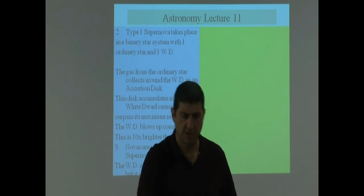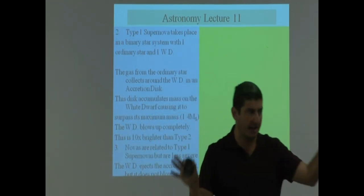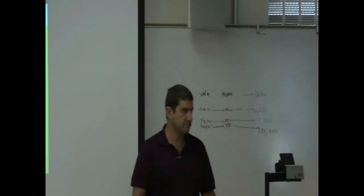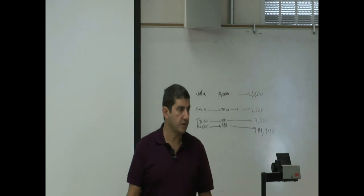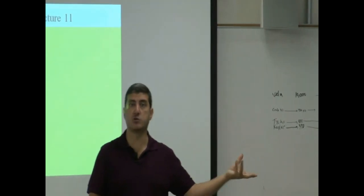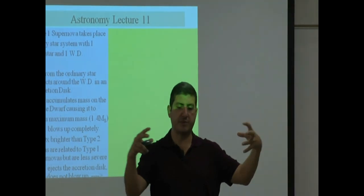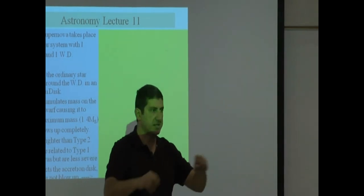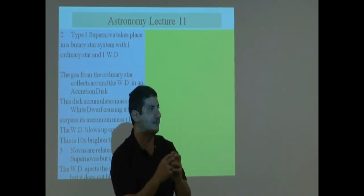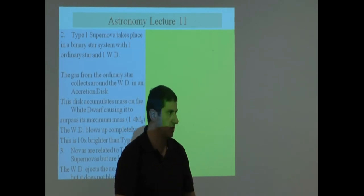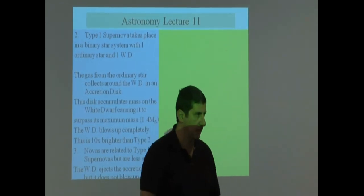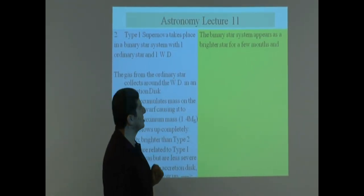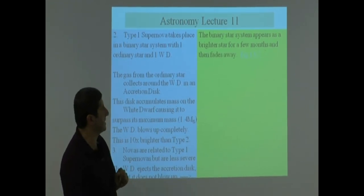So every couple thousand years, the white dwarf will just release this excess mass that has built up around it. That's exactly what happens. The nova is what you want to happen. The mass builds up but it doesn't go over 1.4 and then you release that mass. And then basically, once you release that mass, the mass goes back down. It stays there. It doesn't die.